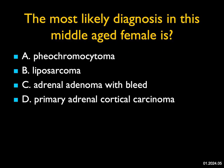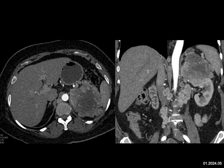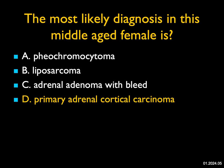The most likely diagnosis in a middle-aged female is? There's a big mass in the left adrenal gland — it's solid and necrotic, borders are not well defined, and it's pushing down and possibly invading the upper pole of the left kidney. There are no liver lesions, but there are small peripancreatic nodes. Pheochromocytomas are typically vascular and can be cystic, but this doesn't look like a typical pheo. This is not a liposarcoma and doesn't look like an adenoma with bleed. This looks like an aggressive, infiltrating tumor. The best diagnosis is primary adrenal cortical carcinoma — a very classic example.